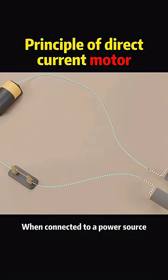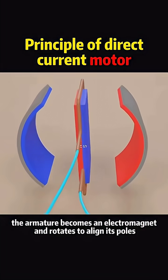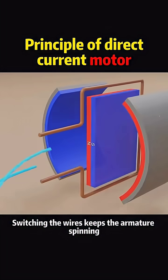When connected to a power source, the armature becomes an electromagnet and rotates to align its poles. Switching the wires keeps the armature spinning.